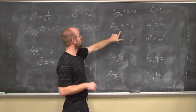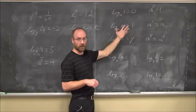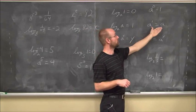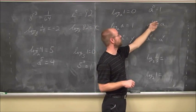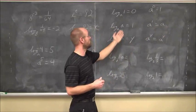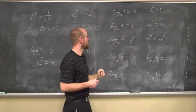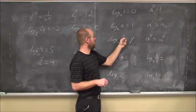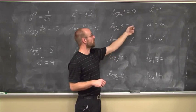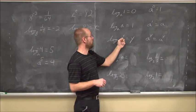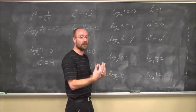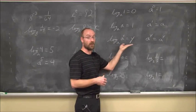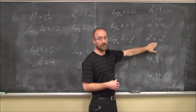Log base A of A equals 1, regardless of what A is, because anything to the first power is itself. If we rewrite this as an exponential equation, A to the first power is just A. So log base A of itself is 1. Here is a concept we're going to use to solve equations: if the bases are the same, it's equal to the power. Log base A of A to the y power — A to what power is A to the y? Well, A to the y equals A to the y.